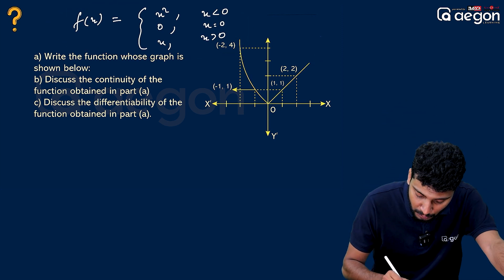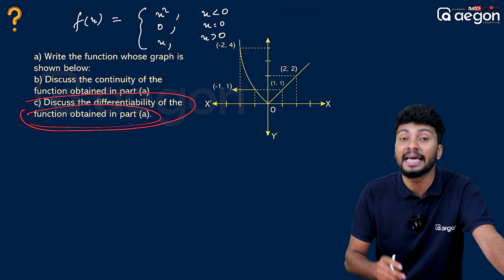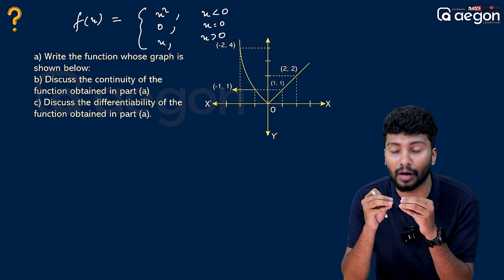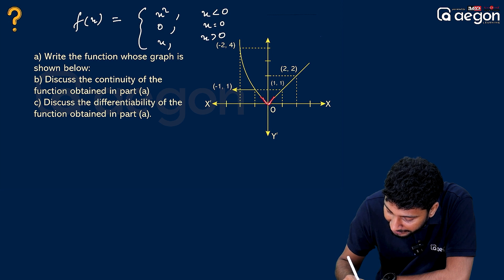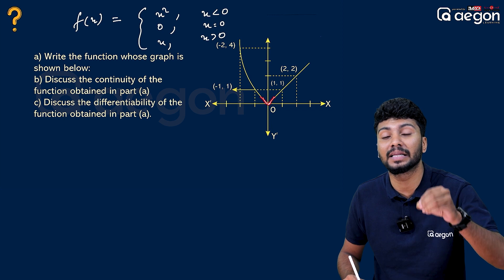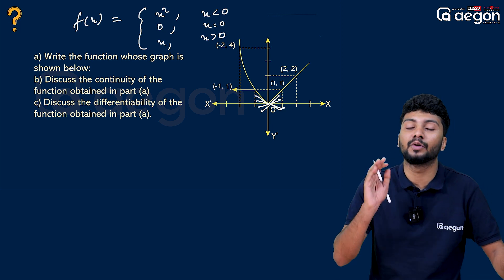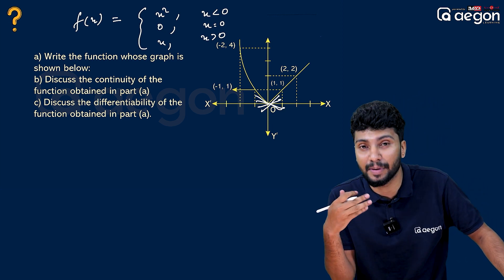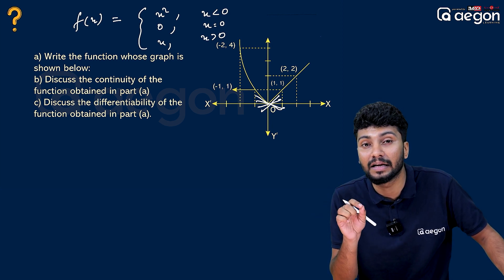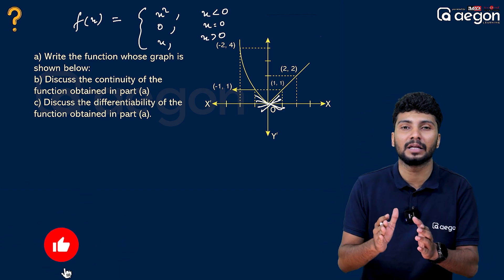Discuss the differentiability of the function obtained in part a. Differentiability depends on whether the graph has a sharp edge. At x equal to 0 there is a sharp corner — you cannot draw a unique tangent there. This means the derivative does not exist at that point, so the function is not differentiable at x equal to 0.